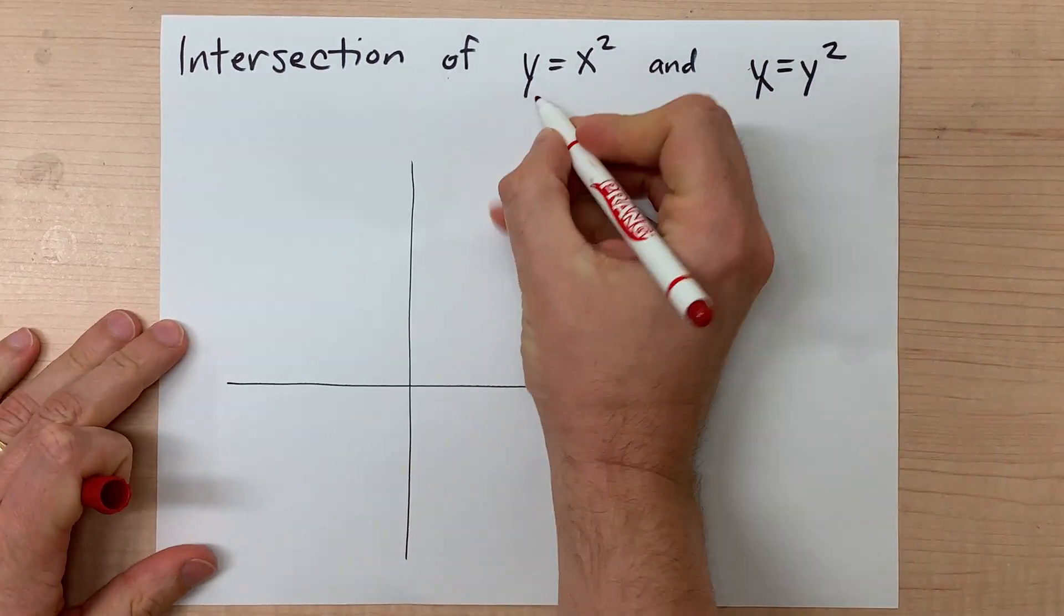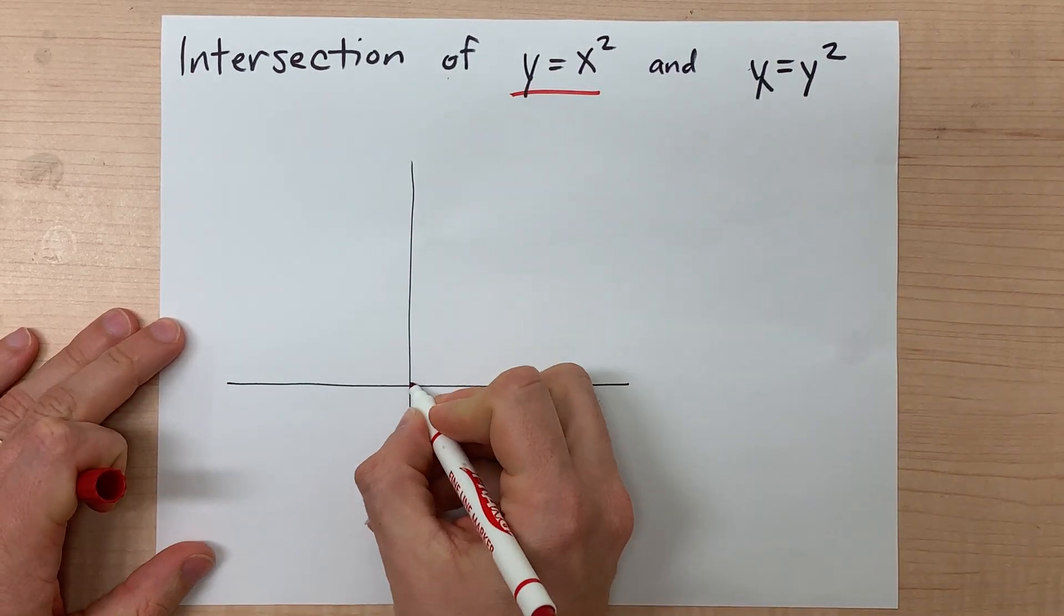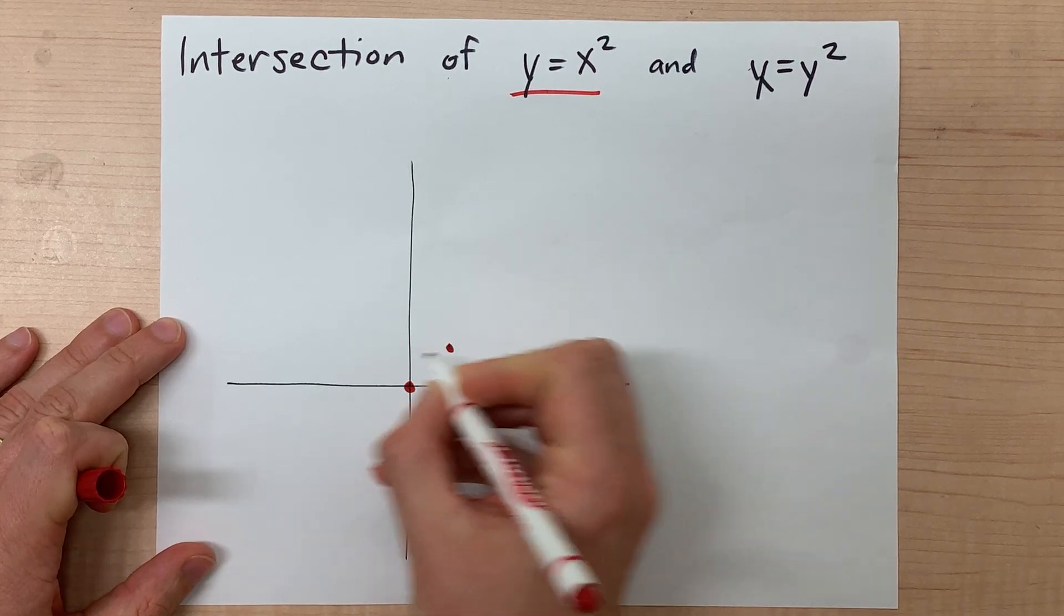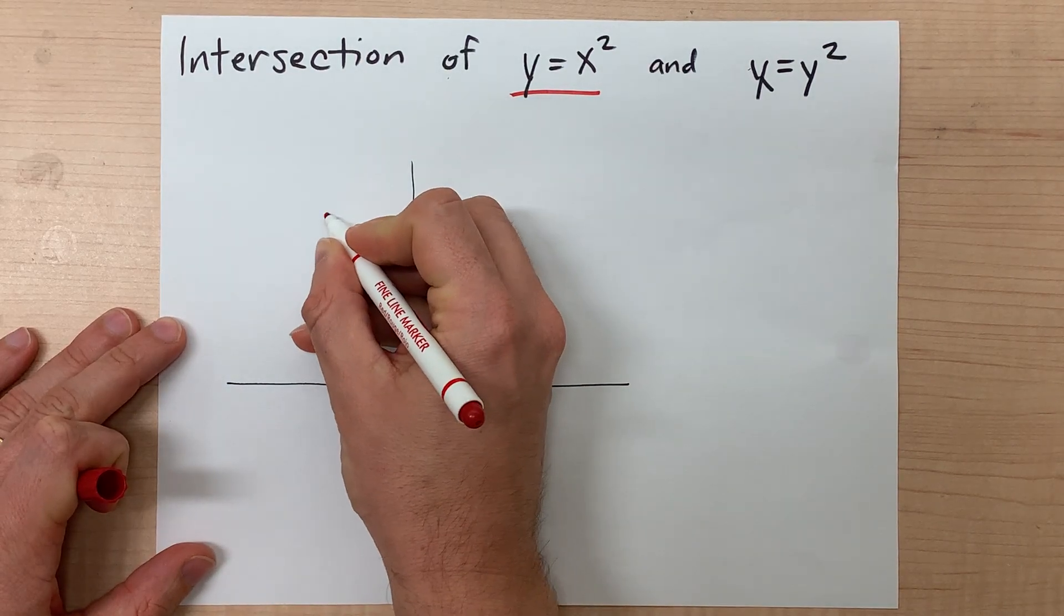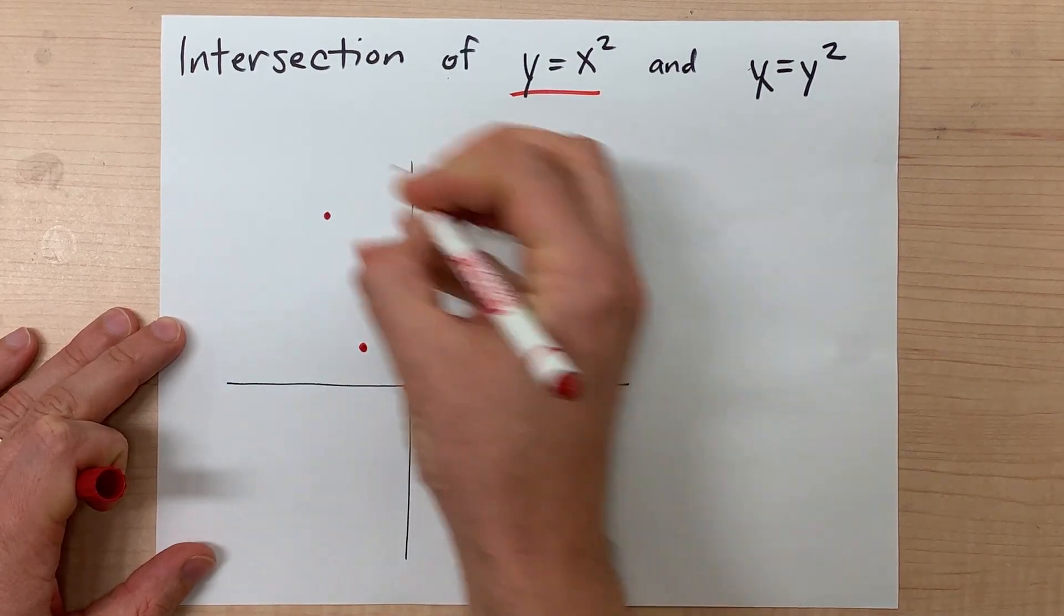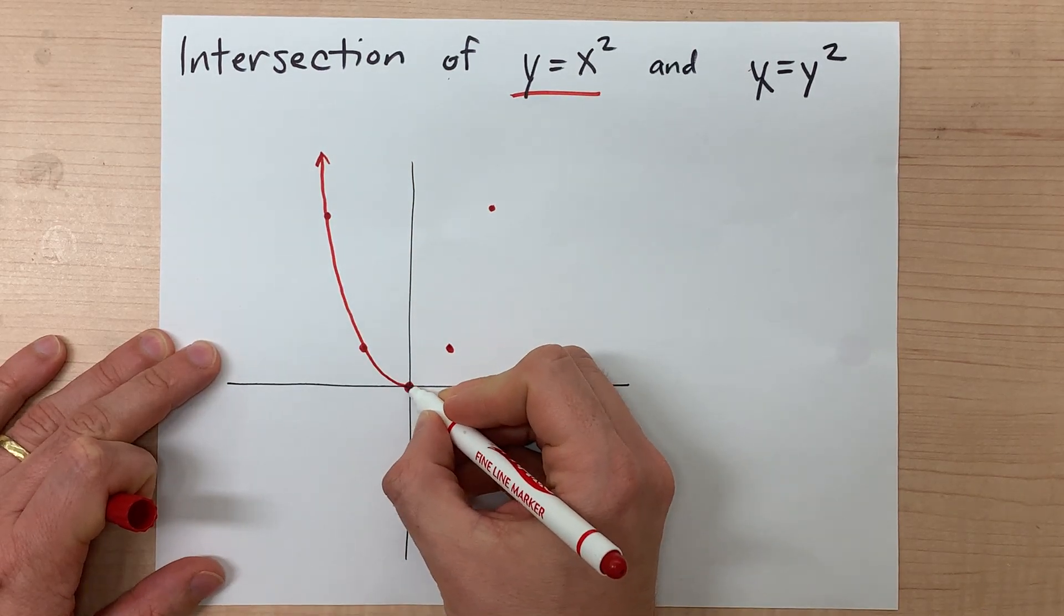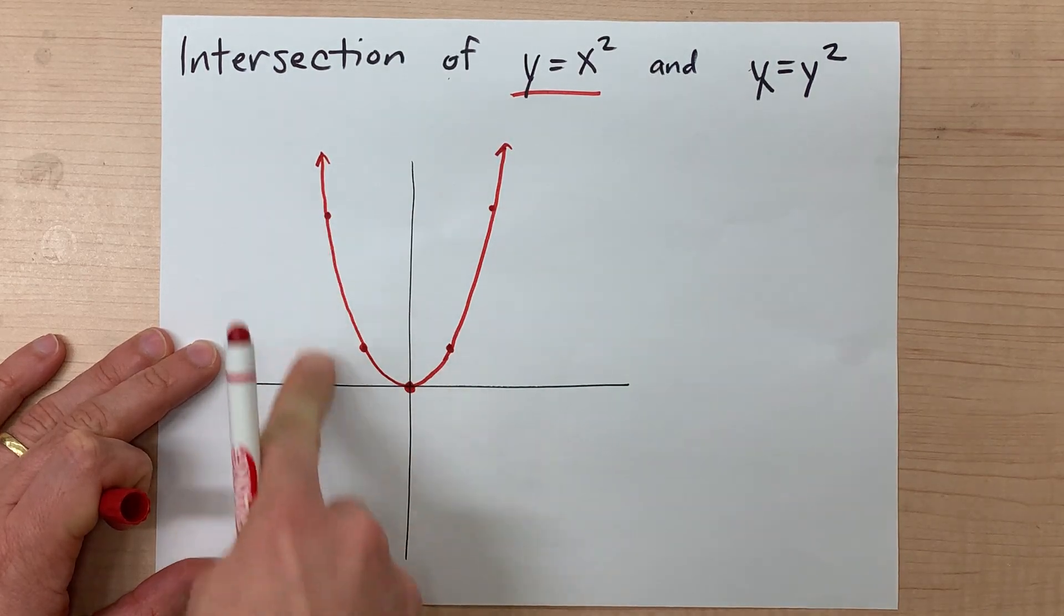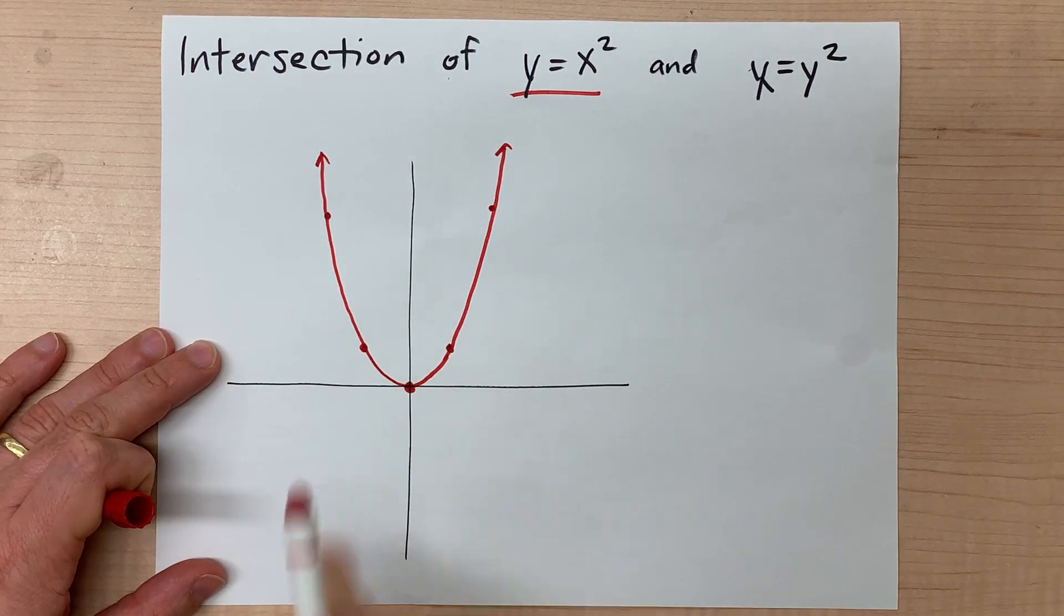Now the first thing we're going to do is graph y = x². Surely you know what that looks like. It starts at (0,0), has points at (1,1) and (-1,1), as well as (-2,4) and (2,4). It's a regular parabola where the y coordinate of each point is the x squared. So -2 squared is 4, -1 squared is 1, 0 squared is 0, etc.